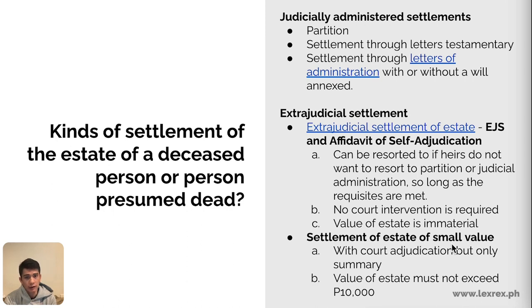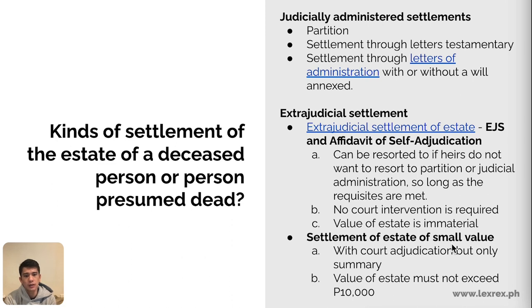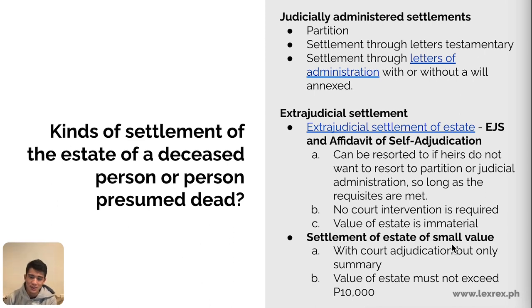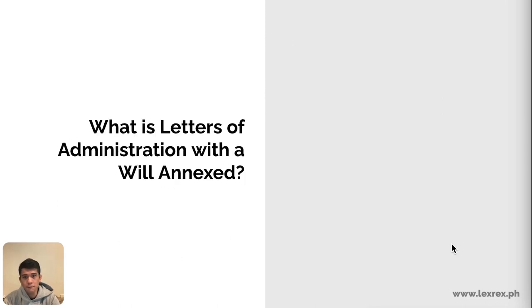There is also settlement of estate of small value. Note that this involves court adjudication but is summary in nature — meaning it is fast and not full-blown. The value of the estate is material here: it must not exceed 10,000 pesos. As of 2023 that amount is very small for an estate, so in a sense this is an obsolete provision that needs to be updated or increased.